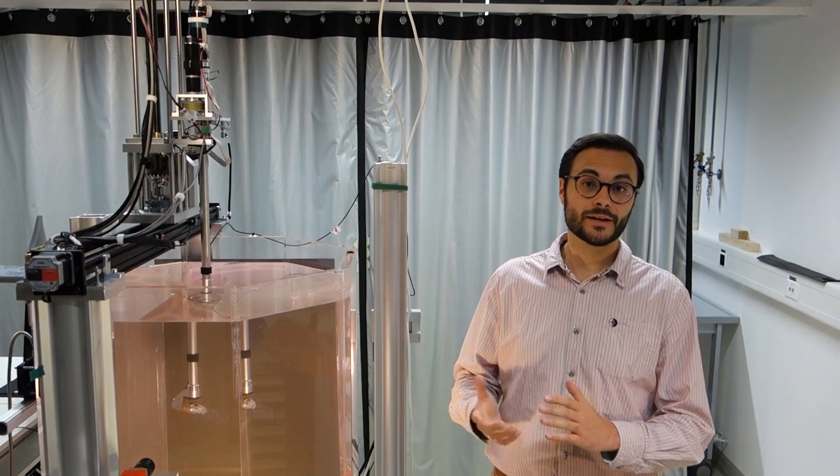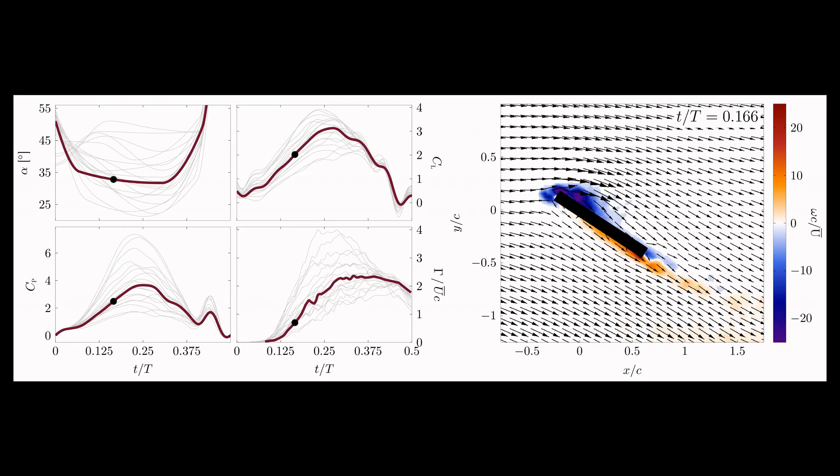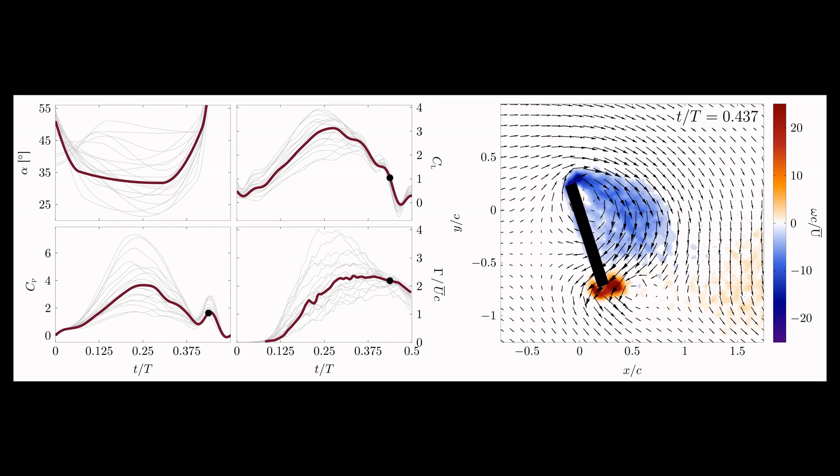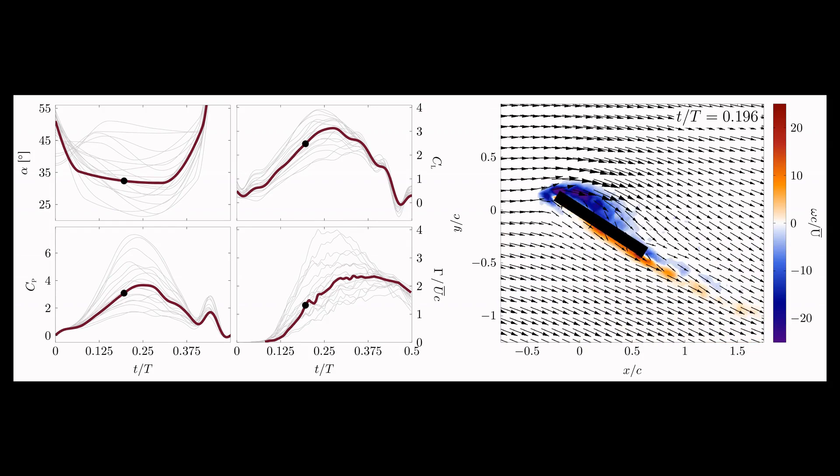So, how does our experimental data look like? We have the time-resolved pitch kinematics and angle-of-attack. We have the lift and power coefficient recorded by the force transducer. And we have the leading edge vortex circulation extracted from the flow field images you see to the right.